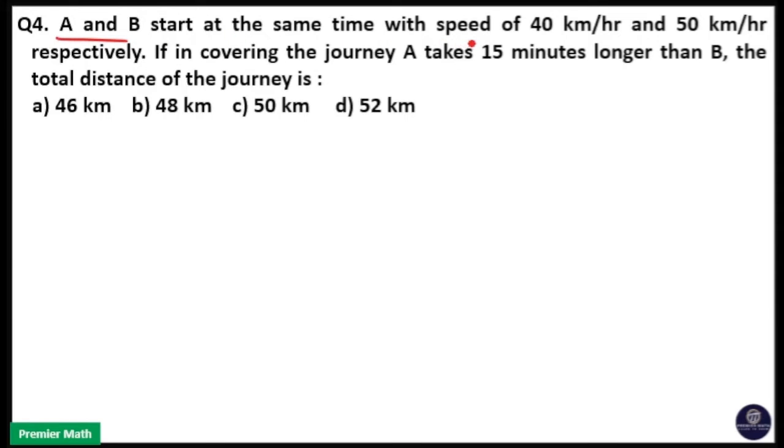A and B start at the same time with speeds of 40 km per hour and 50 km per hour respectively. If in covering the journey, A takes 15 minutes longer than B, the total distance of the journey is.